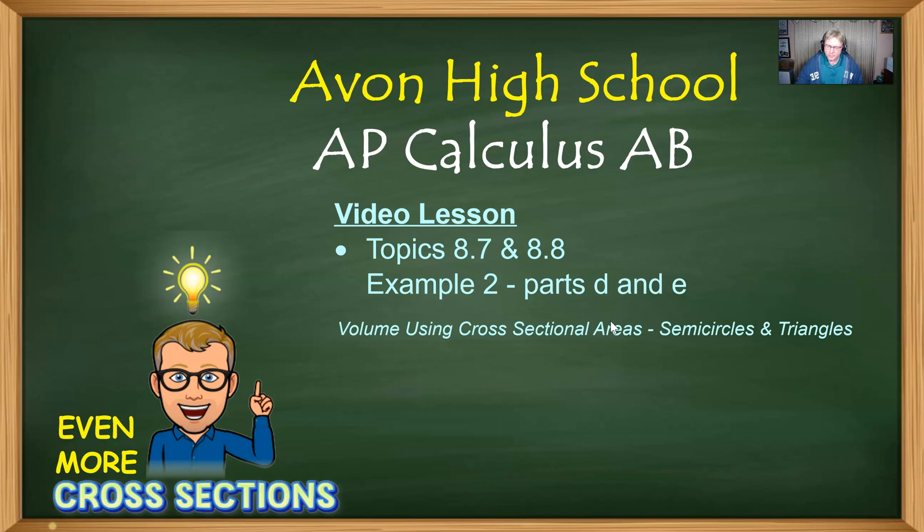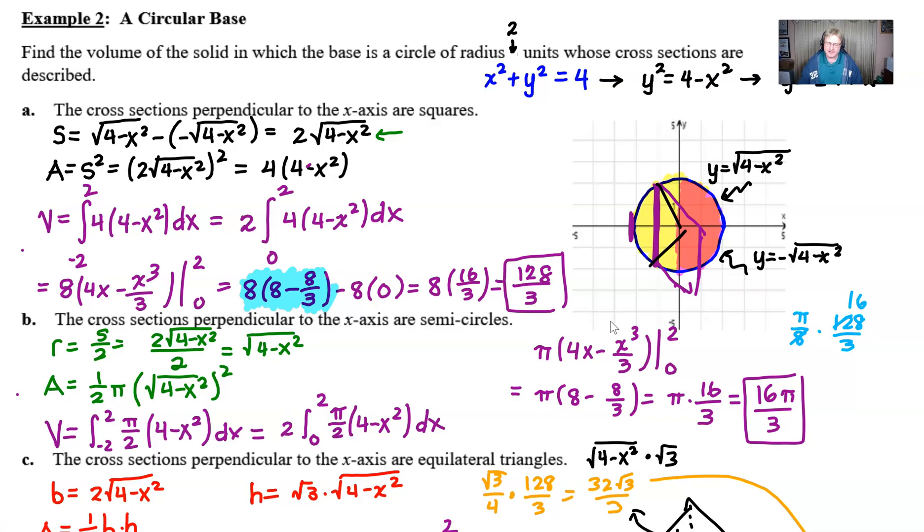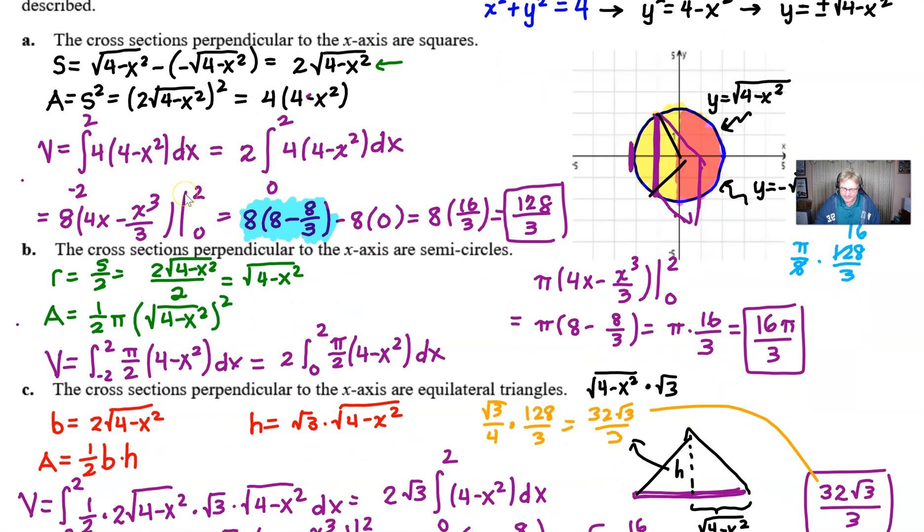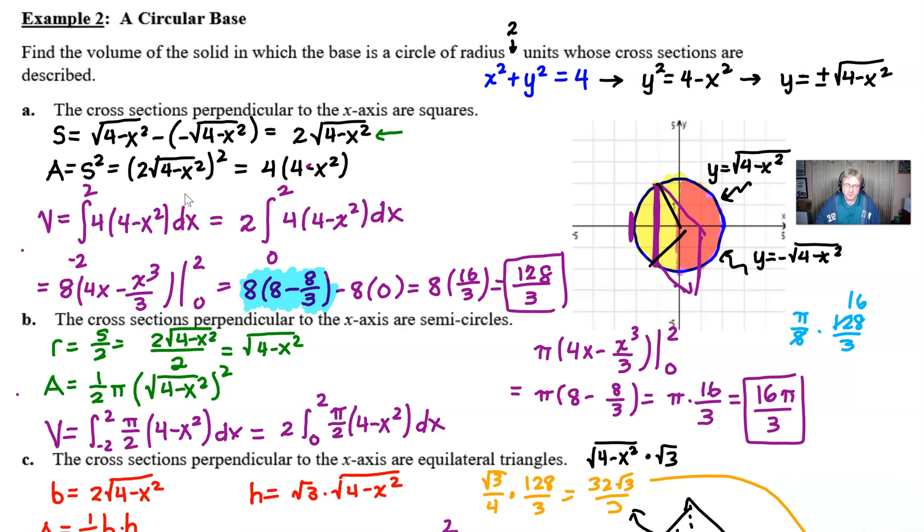So even more cross sections. What are we talking about? Well, when you last left us, we had this mess going on. And man, I just looked at this and this is kind of a crazy mess, isn't it? And we had found the volume by using cross sections perpendicular to the x-axis as squares. And the key thing that I want to point out here,